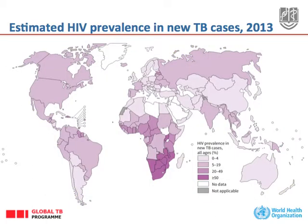This shows the estimated HIV prevalence among TB cases. It is the African continent that has the highest percentages of people with tuberculosis who are HIV positive — more than 50% in Southern Africa.